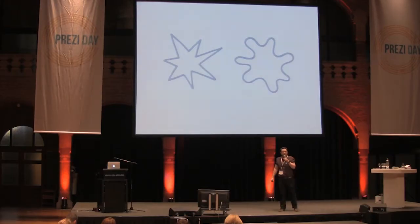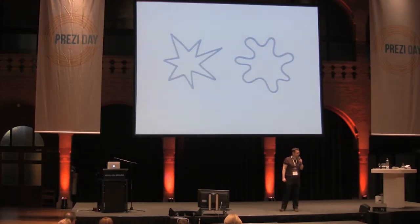This is a famous visual perception test, and these two shapes have a name. One of them is called Kiki, and the other one is called Buba. And you have to tell me which one you think is which.